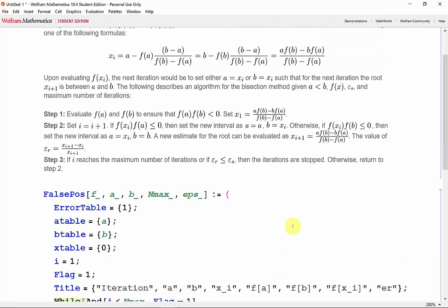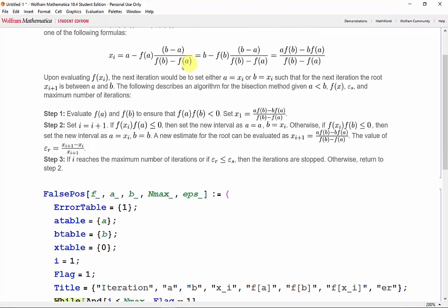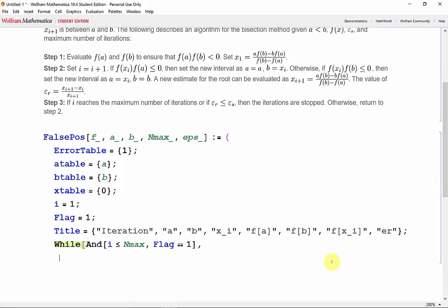And now here's where things change. We need to calculate xi, which we get from this formula up here. So xi is now going to be equal to atable[i] times f(btable[i]) minus btable[i] times f(atable[i]).